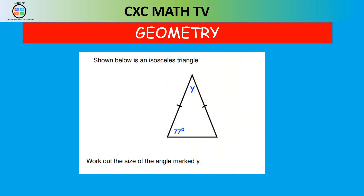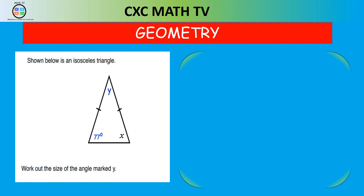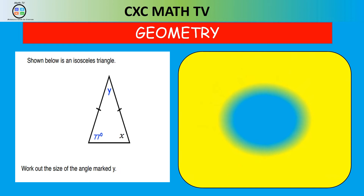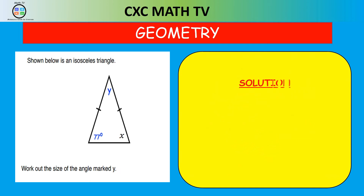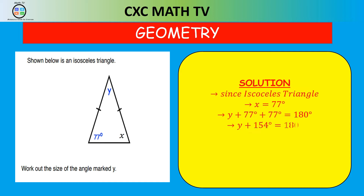The next question: shown below is an isosceles triangle — work out the size of the angle marked Y. We know angles in a triangle sum to 180. Since it is isosceles, the unknown angle on the other side equals 77 degrees as well. So Y plus 77 plus 77 equals 180. 77 and 77 is 154. Transposing, Y equals 180 minus 154, which is 26 degrees.